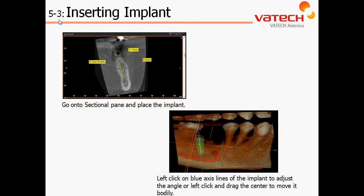Chapter 5, Section 3: Inserting Our Virtual Implant. We'll have the ability to place our virtual implant using either the grayscale view, such as our sectional view, as well as placing and assessing the orientation of our implant within our 3D rendering, as shown here in the bottom right-hand corner.